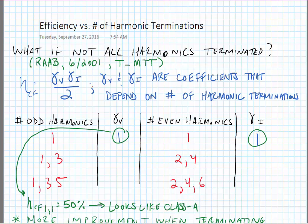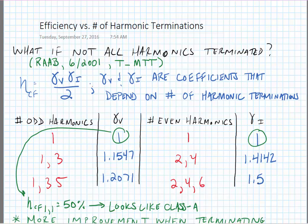The paper gives some of these coefficients, which I'll fill in here. What we see immediately is that the coefficients for the current waveforms — gamma_I — are bigger than those for the voltage waveforms. What that tells us is that terminating even harmonics will have a bigger impact on efficiency than terminating odd harmonics.